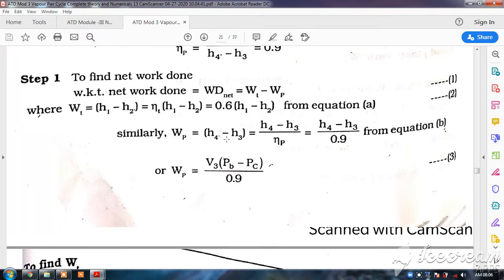Similarly, pump work is equal to H4 dash minus H3, that is H4 minus H3 divided by efficiency of the pump, that is 0.9 given.